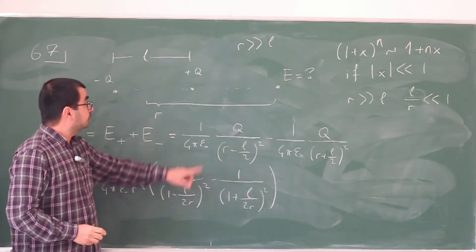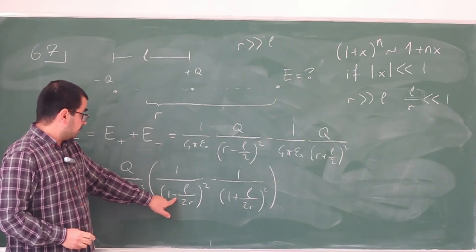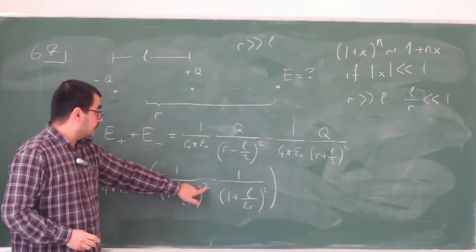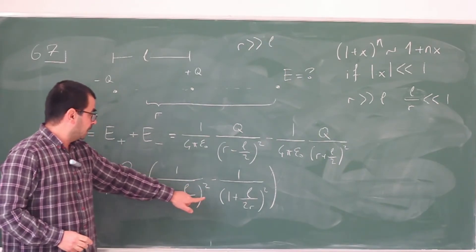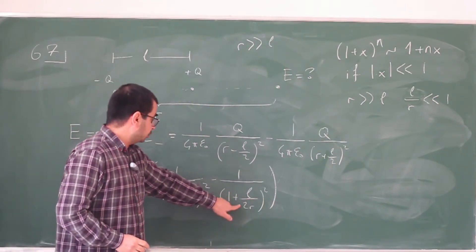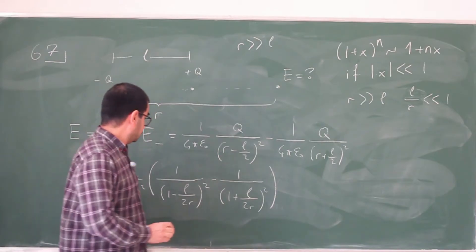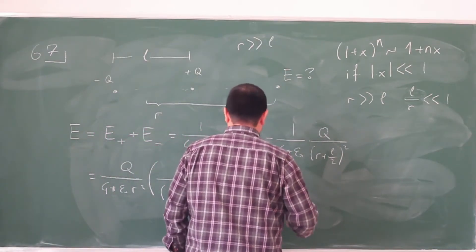Now these are of this form. Here, my x is minus L over 2r, my n is minus 2. And here, my x is L over 2r, my n is minus 2. So I can utilize binomial expansion.